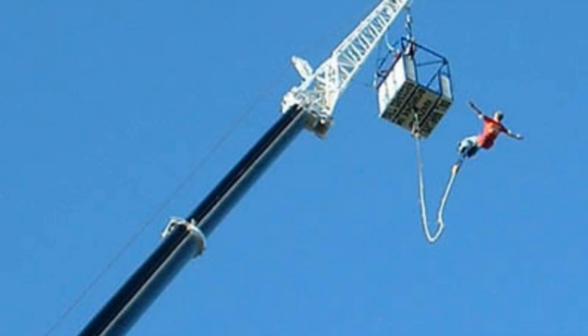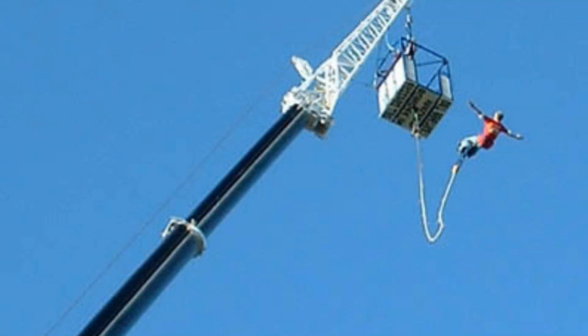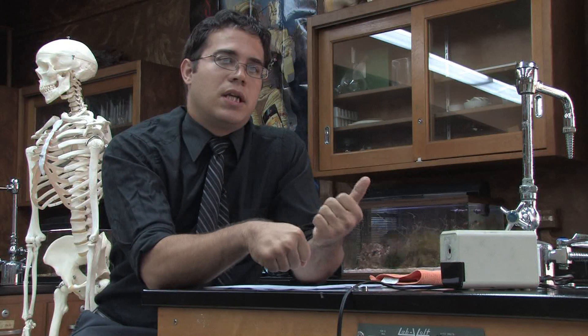So once you take into account the weight of the person and the rigidity of the bungee cord, then you can determine how far down a person is going to travel when they jump. And depending on the size of the person, you can use different bungee cords with different rigidities to make sure that they don't hit the ground and that everything goes smoothly.